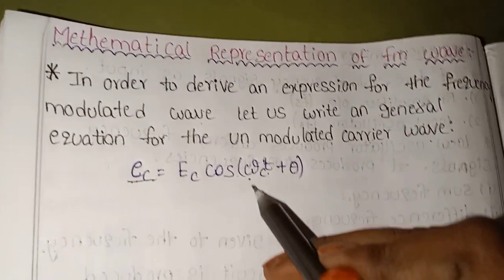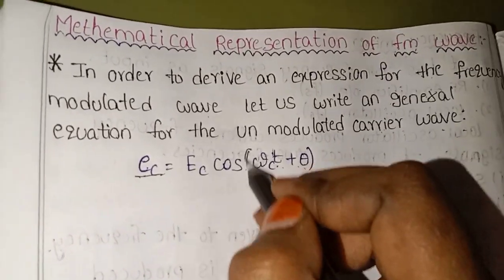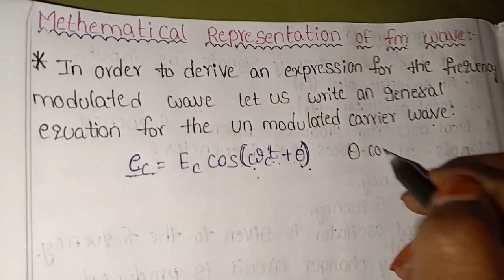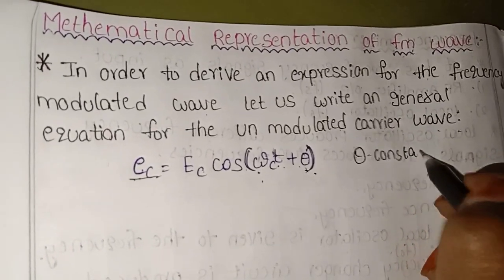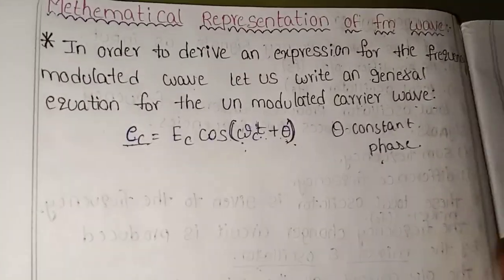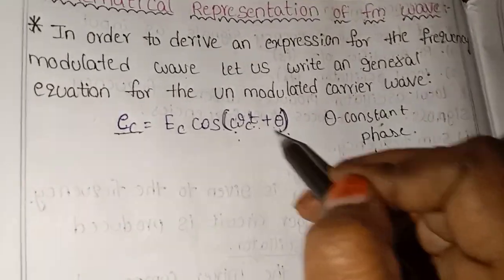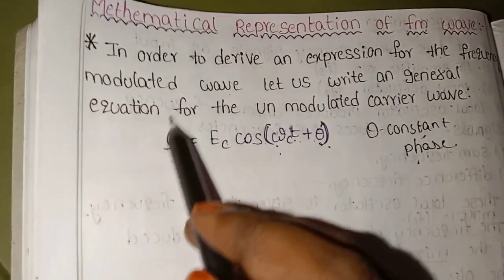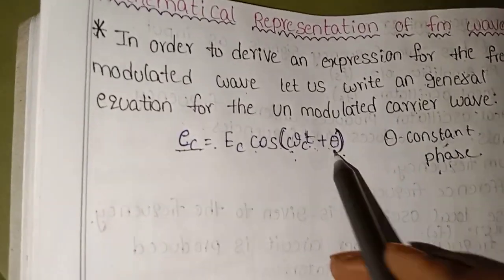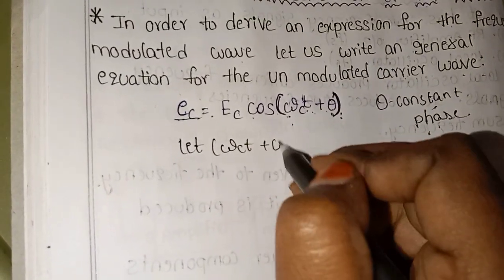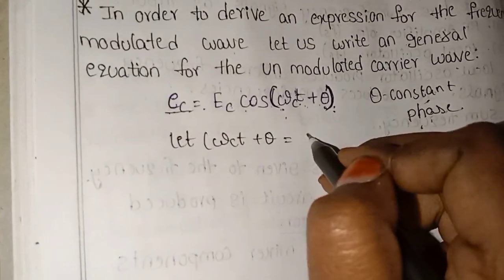We will also add plus theta. Theta is a constant phase. We will represent the phase — theta is equal to 0. So the carrier wave equation is: EC = EC cos(ωct + θ). Let us write ωct + θ = φc, representing the total instantaneous phase.